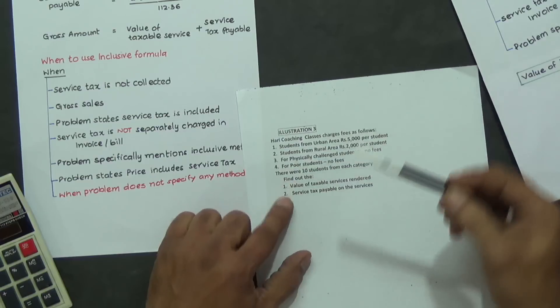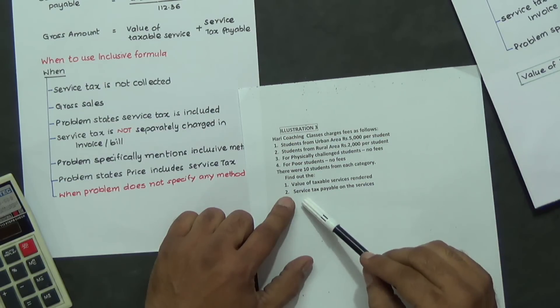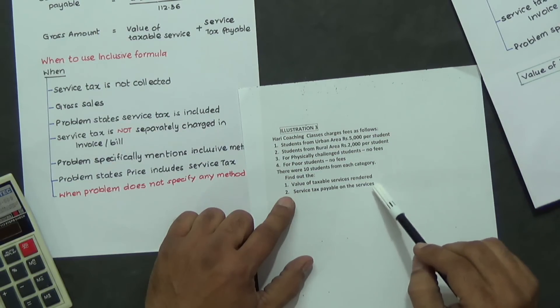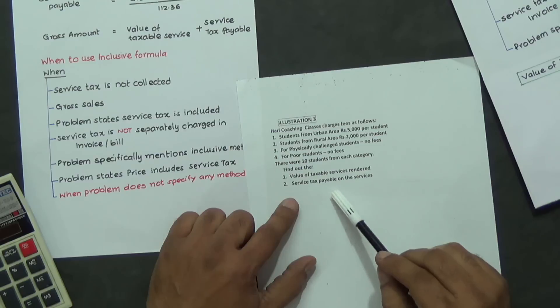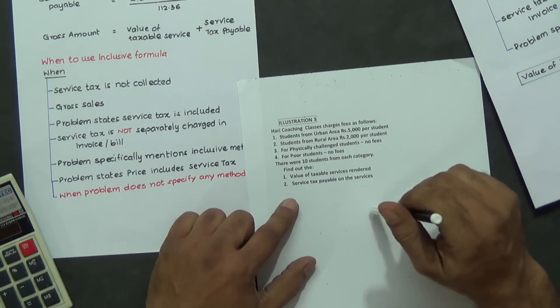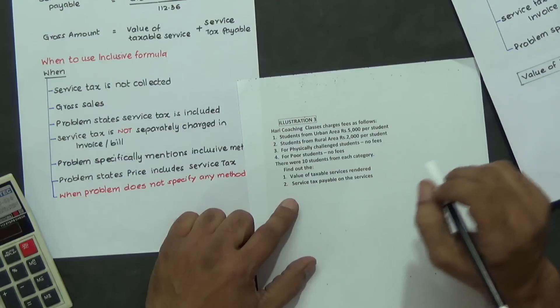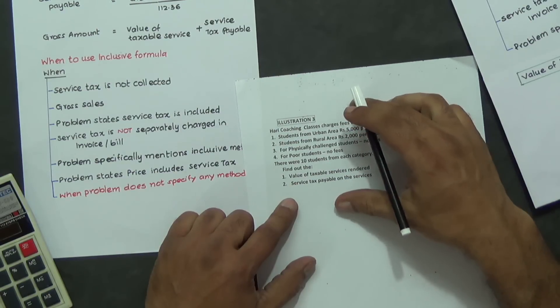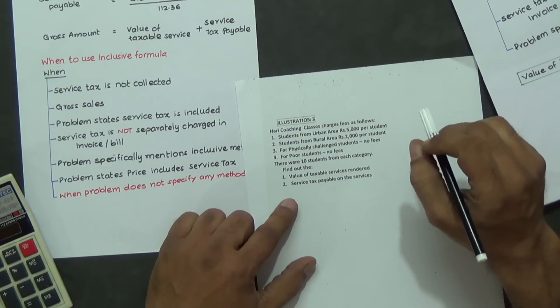Each of them is a category now. Find out: one, value of taxable service rendered; two, service tax payable on the services. Here, we'll observe that no method has been specified in the problem. The problem doesn't say use inclusive formula or exclusive formula.